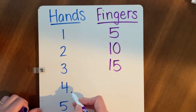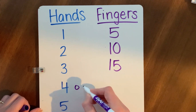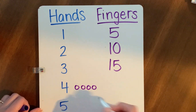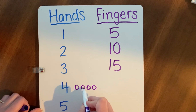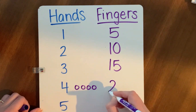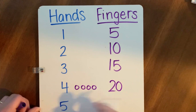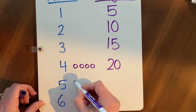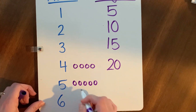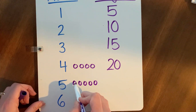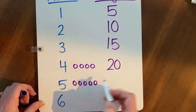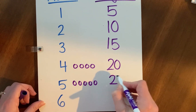What about four hands? Four hands — five, 10, 15, 20 fingers. Five hands — five, 10, 15, 20, 25 fingers.